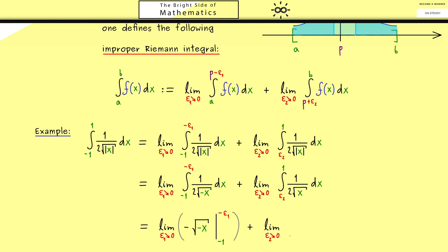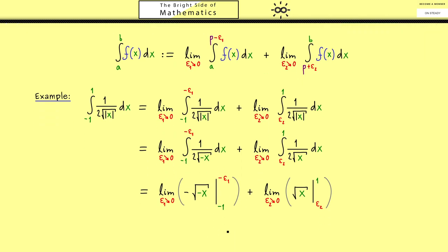And indeed, a similar thing we get for the positive part. There is just the square root of x. Then in the last step we just have to put in the upper and the lower number here. So the first one here gives us minus the square root of epsilon 1 minus minus the square root of 1.